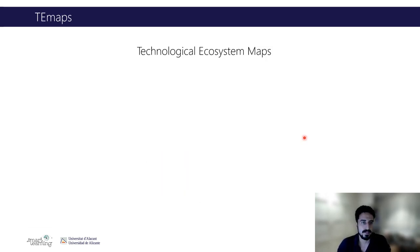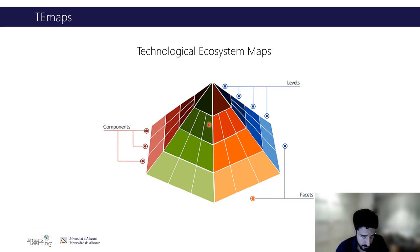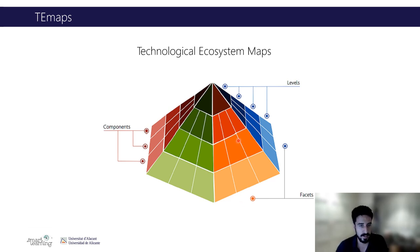A technological ecosystem map is a polygonal representation of the main elements of a technological ecosystem. It has different elements: the facets, that is each side of the polygon, which represent the principles to be analyzed in different levels of abstraction, and the components are the concrete aspects that are affected by each principle.